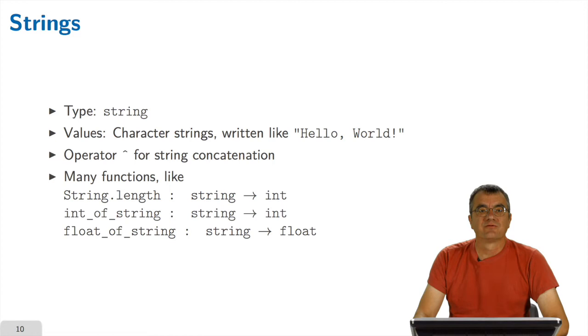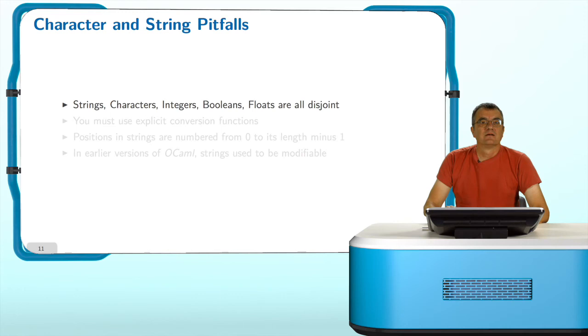Some of the pitfalls, so let me repeat again. The basic data types are disjoint, so you cannot rely on implicit conversion, as it is the case with some other programming languages. And you always have to use explicit conversion functions. Strings, as many things in computer science and as this MOOC, are always numbered starting from zero and not starting from one.